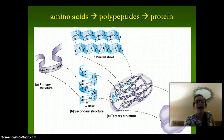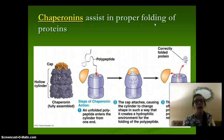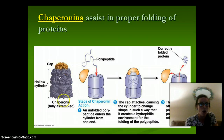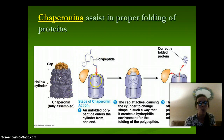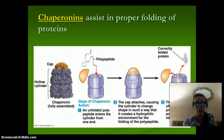Amino acids make polypeptides, and then polypeptides make a protein. Chaperonins assist in the proper folding of the protein. Basically, it's a hollow cylinder and a cap — the polypeptide enters into the chaperonin, the cap goes on, and then it helps fold the polypeptide correctly into its protein.